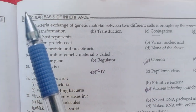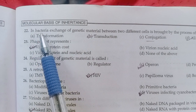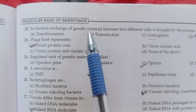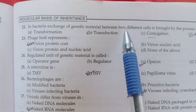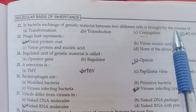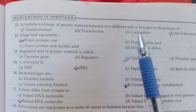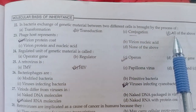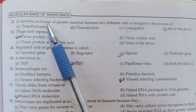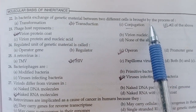Question 22: In bacteria, exchange of genetic material between two different cells is brought about by the process of — option D is correct, all of the above: transformation, transduction, and conjugation.